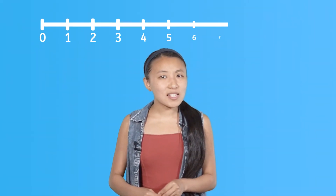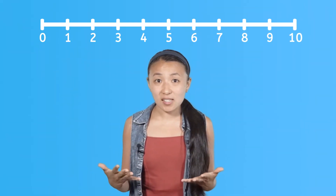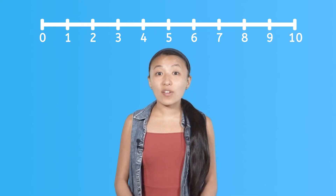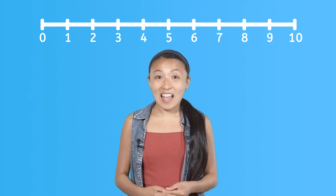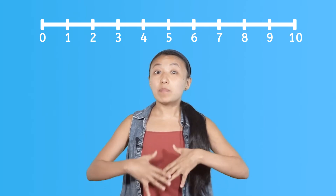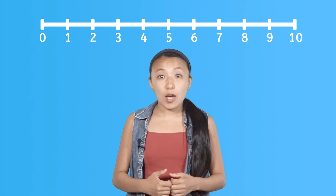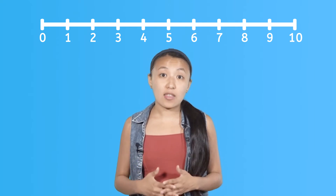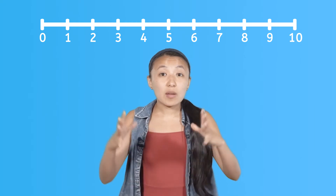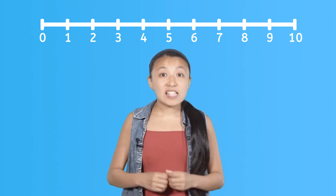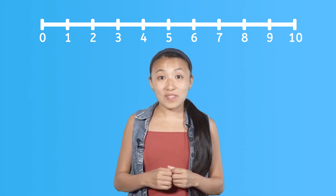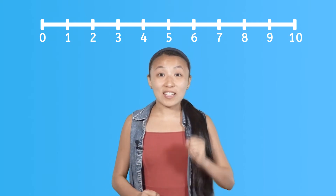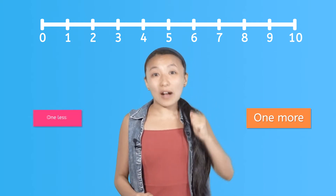So let's think about what this all means. When we count forward, each number is one more than the number before it — that's why numbers get bigger as we keep counting up. When we count backward, each number is one less than the number before it — that's why numbers get smaller as we keep counting down. This pattern is why counting is one of our best tools for finding one more or one less.